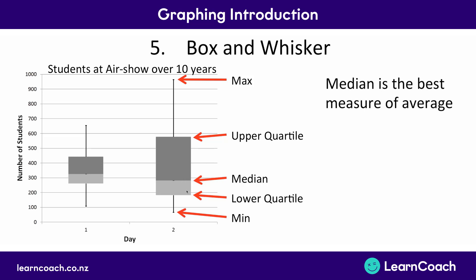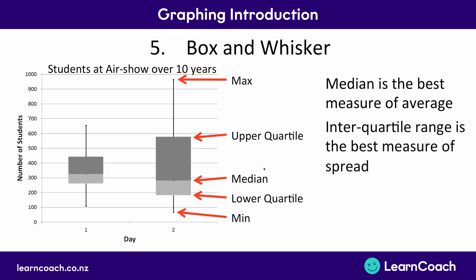The last helpful thing you can take from these graphs is a measure of spread — how spread out your data is. On day 2, the number of students attending is far more variable: sometimes below 200, sometimes above 500, nearly at 600. Whereas day 1 is far more consistent, generally between 250 and 450. The way we measure spread is by using the interquartile range — the difference between the upper quartile and the lower quartile, showing how spread out the middle box is. Day 2 will have a much bigger interquartile range than day 1 because day 1 is more consistent.